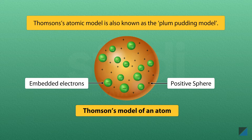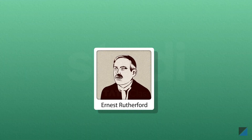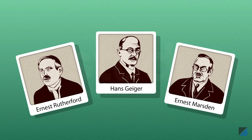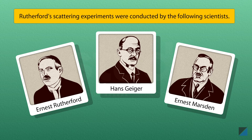It is also called the Plum Pudding Model. In the year 1911, Ernest Rutherford along with Hans Geiger and Ernest Marsden conducted a series of experiments with the aim of exploring the structure of an atom. These experiments were called Rutherford's Scattering Experiments.